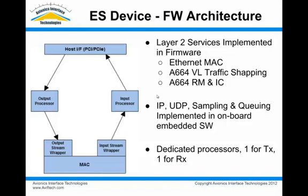The output processor is responsible for taking application or payload data written to memory on the card from the host, then doing the upper layer of protocol processing like IP fragmentation, and also implementing the ARINC 653 sampling and queuing type functions — building messages with all the headers and overhead, then sending them via the MAC, which does the ARINC 664 traffic shaping.